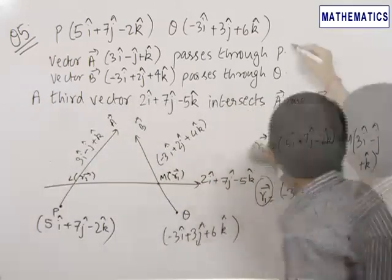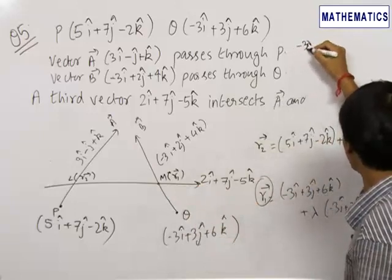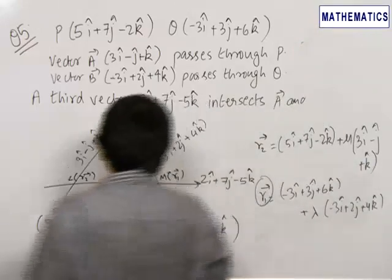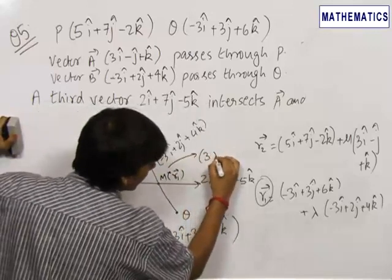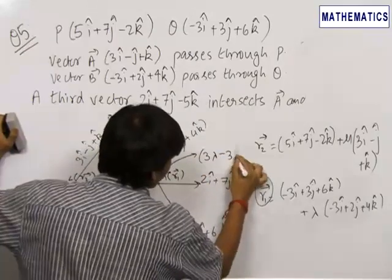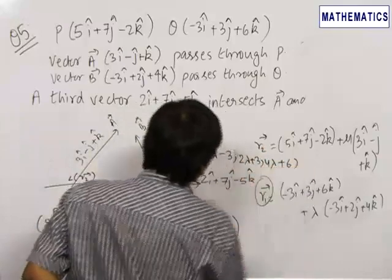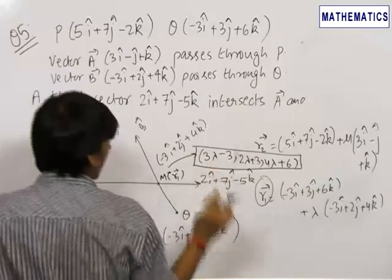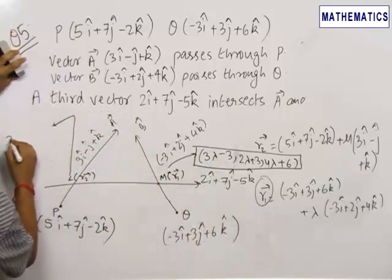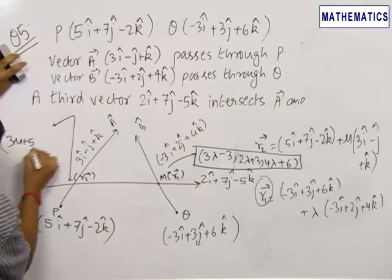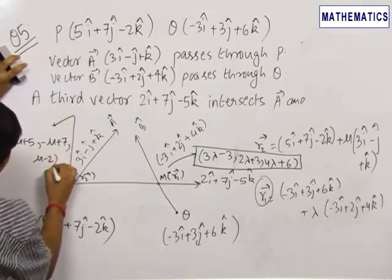The position vector of M is r₁, which can be written in component form as (−3λ − 3, 2λ + 3, 4λ + 6). We can also write point L as (3μ + 5, −μ + 7, μ − 2).